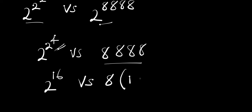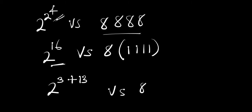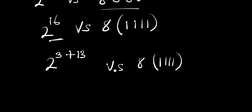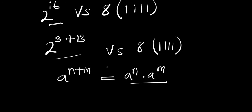Now the next thing we are going to do is rewrite two power 16 as two power three plus thirteen. Then we apply this identity: if we have a power n plus m, this equals a power n times a power m. So we apply this identity here.